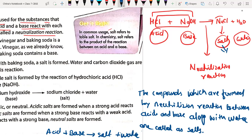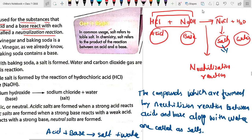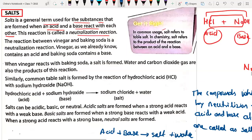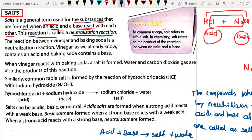Take a screenshot and then we will move further. Salt is a general term used for the substance that is formed when acid and base react with each other. This reaction is called a neutralization reaction. Most of the time you will be asked what is a neutralization reaction — you must write: the reaction in which acid reacts with base to form salt and water is called a neutralization reaction.